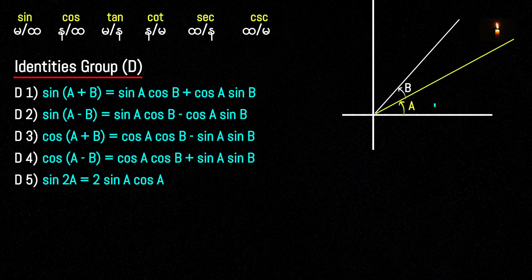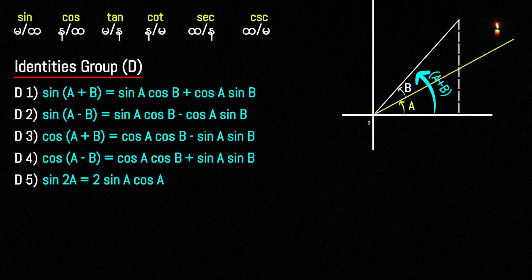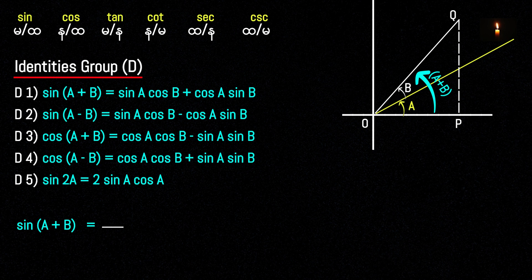sin(A+B) — if your sign, choose sin(A+B) equals sin A cos B plus cos A sin B. We can look at the geometry using lines PQ divided by OQ.